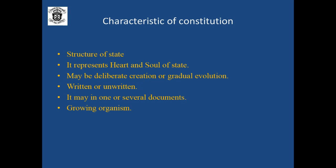The next characteristic of the constitution is that it may be in written form or in unwritten form. In written form, the best example is India's constitution. We can also take the USA as the best example of a written constitution. In the case of India, the constitution was written down by the constituent assembly. It took 2 years, 11 months and 18 days to complete the constitution work.